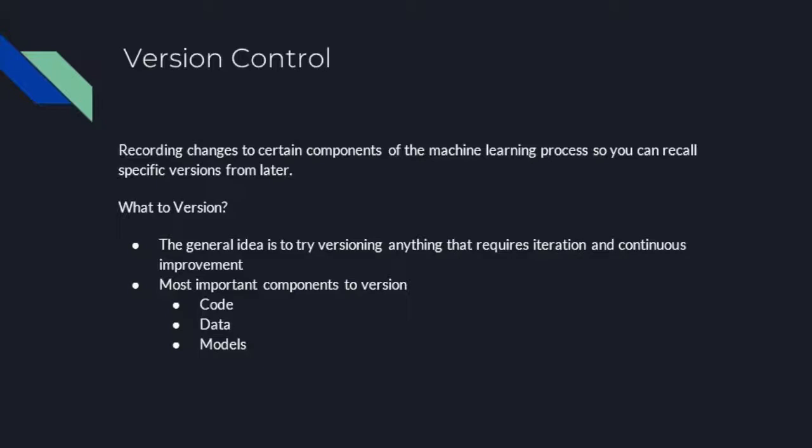Version control is just recording changes that you make to your code or your data and saving them in a way that you can come back to previous versions — that's basically what version control is. When you're doing data science, the general idea is to version everything or anything that you iterate over. If you're working with code, or if you have separate platforms for your analysis, modeling, or data, try to version everything as much as you can.